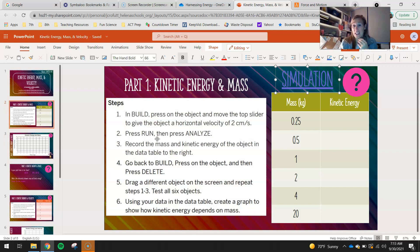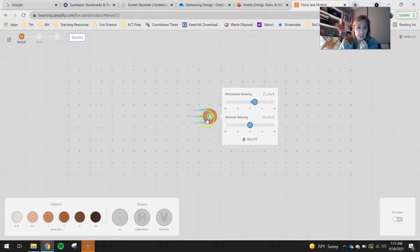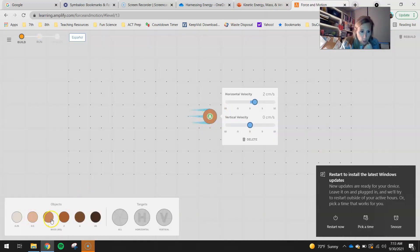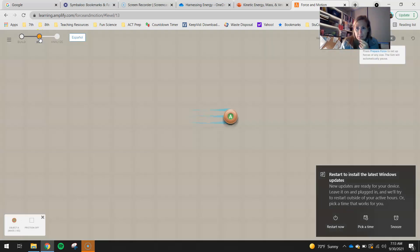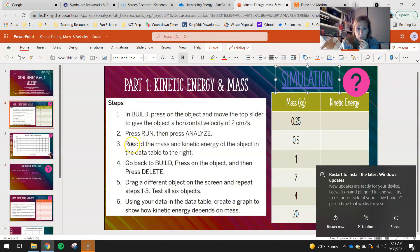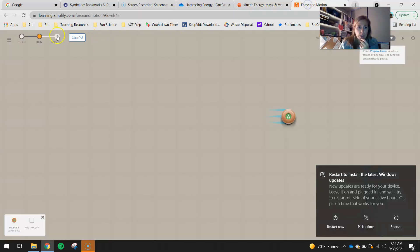That way we can observe what happens when we change the mass. How does the kinetic energy respond? So then you guys will press run and then analyze. So what we're going to see with this is right here, our puck is one kilogram. You guys can kind of tell by the color of the puck. So I can go ahead and hit run. And I'm going to watch it run. And then when I go to analyze, I'm going to look at the mass and the kinetic energy of the object in the data table to the right.